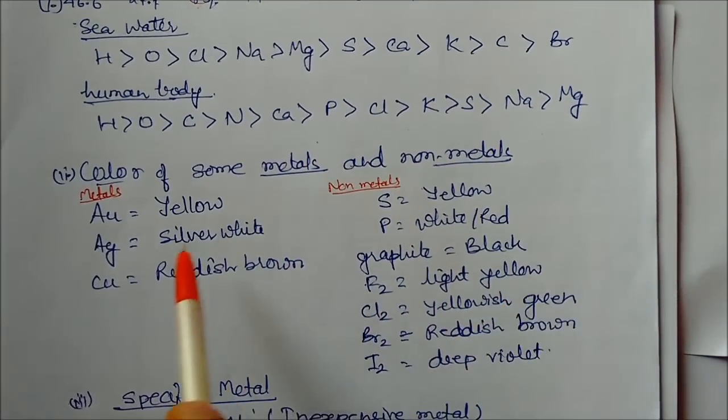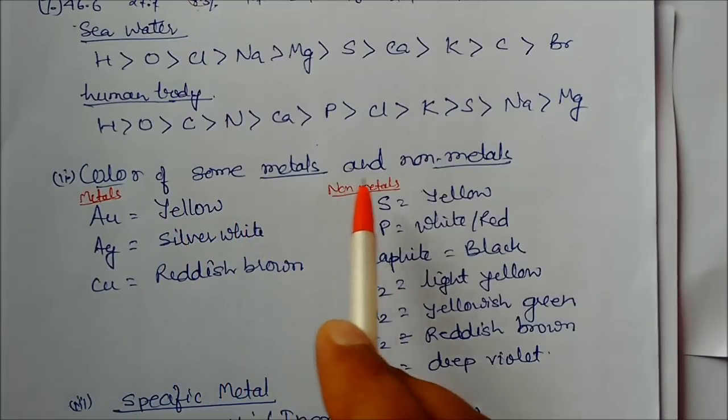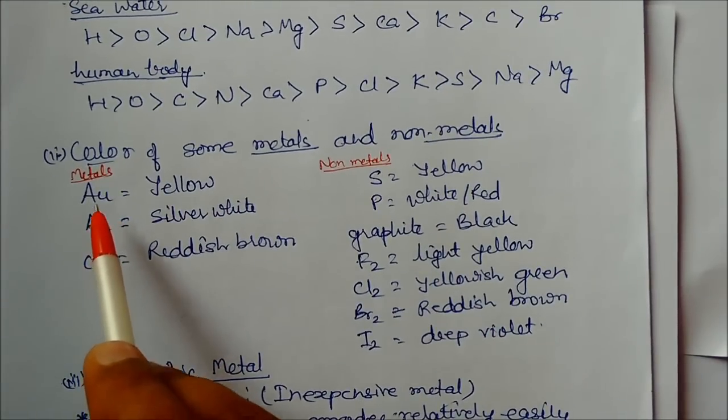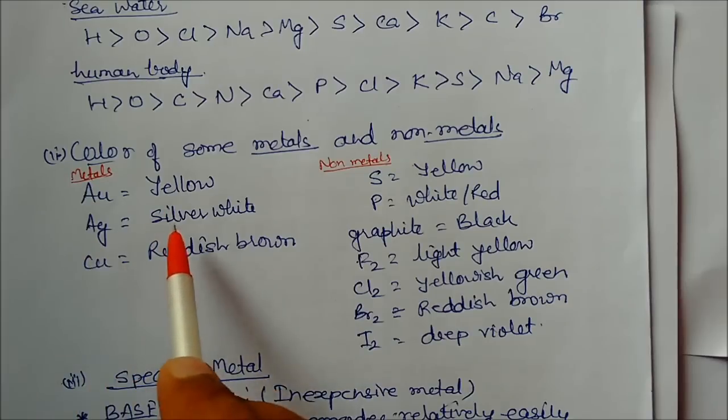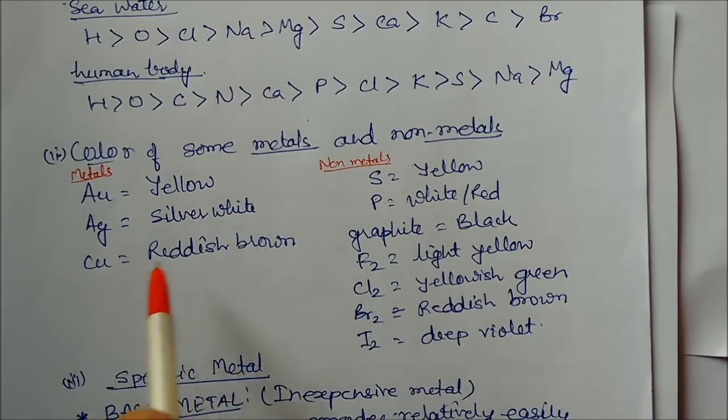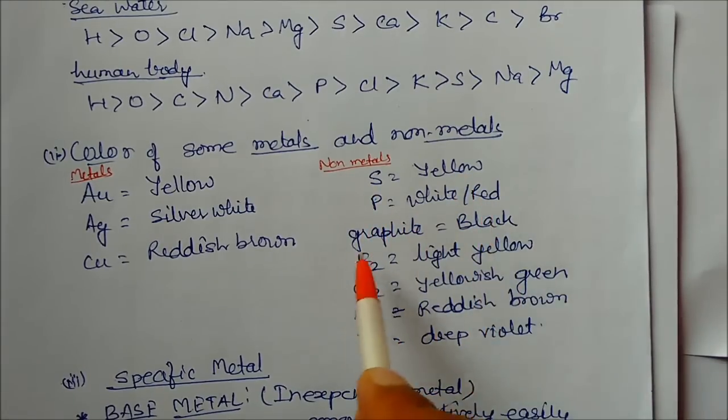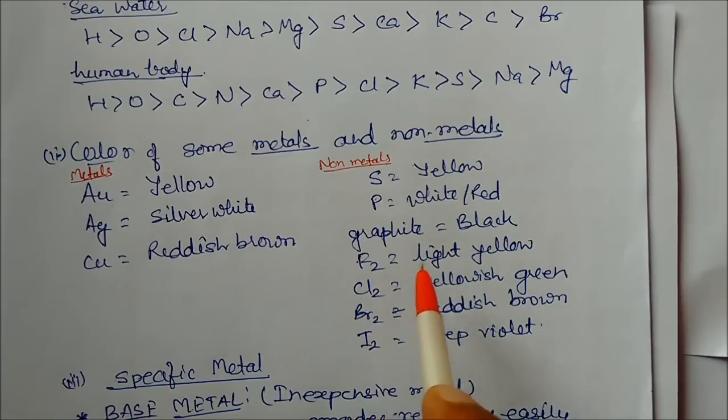Color of some metals and nonmetals: colored metals are very few—gold is yellow, silver is silvery white, copper is reddish brown, rest are white. In nonmetals, sulfur is yellow, phosphorus white or red, graphite black, fluorine light yellow, chlorine yellowish green, bromine reddish brown, iodine deep violet.